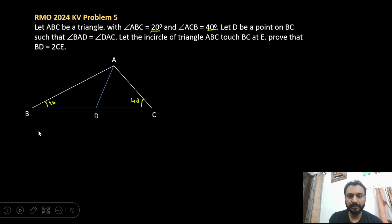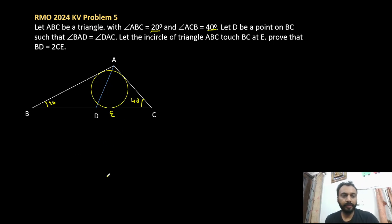Now there is an incircle of the triangle which touches BC at a point E. Let's say this point is E. So we have to prove that BD is twice of CE.